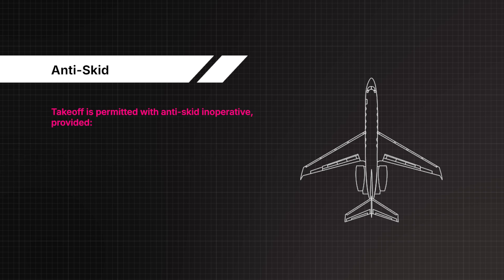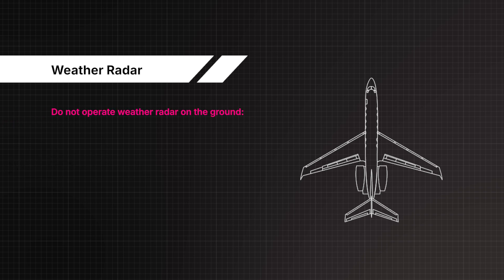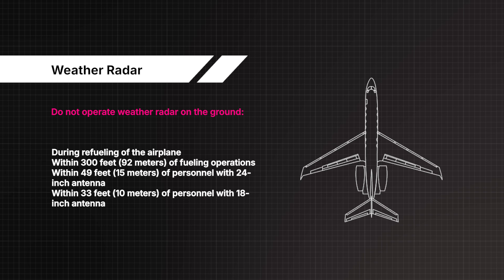Take-off is permitted with anti-skid inoperative provided: ground spoilers are operative; rated power and 20-degree flaps are used; cowl and wing anti-ice systems are not used. Do not operate the weather radar on the ground during refuelling of the airplane, within 300 feet of fuelling operations, within 49 feet of personnel with 24-inch antenna, or within 33 feet of personnel with 18-inch antenna.